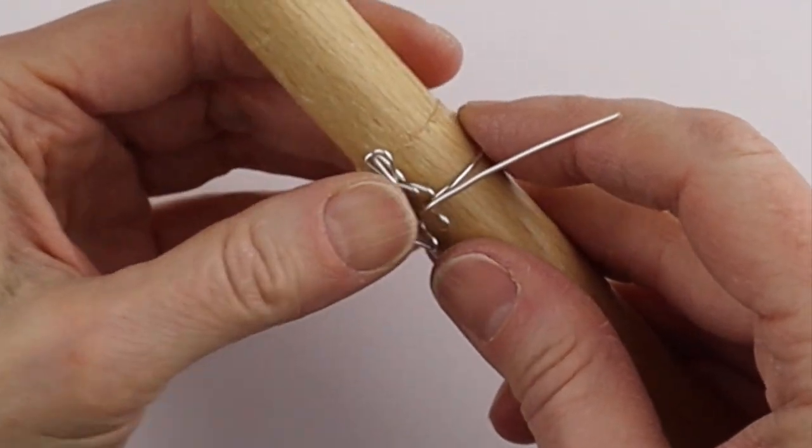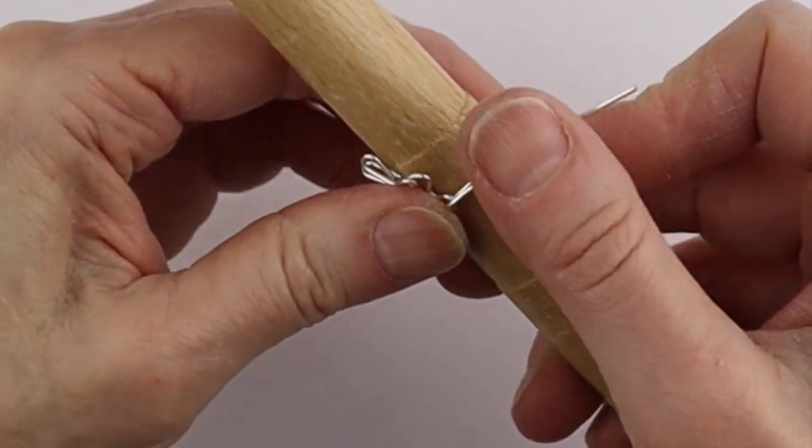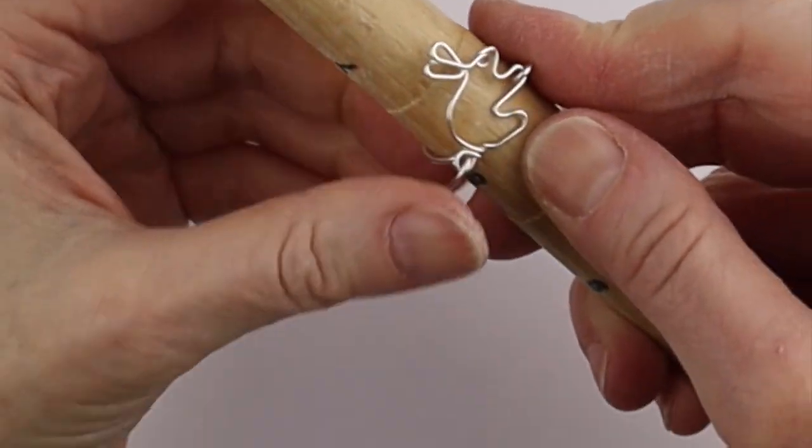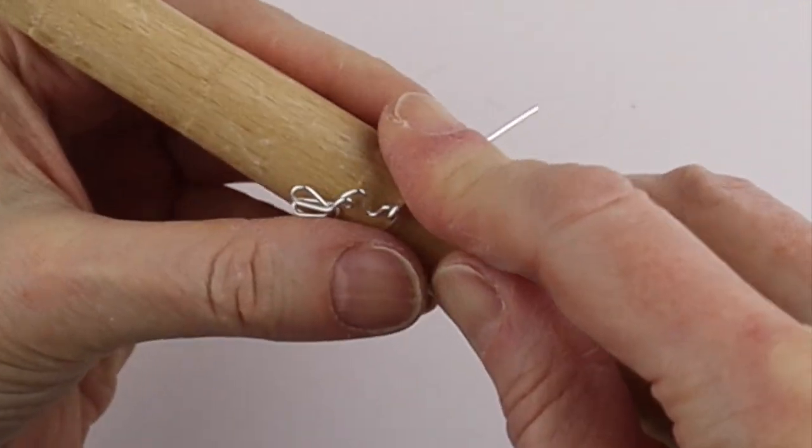Put it back on the ring mandrel. Adjust it. Pinch the wire back so it's firmly in place.